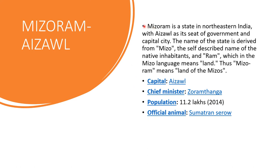The next one is Mizoram and its capital is Aizawl. Mizoram is a state in northeastern India with Aizawl as its seat of government and capital city. The name of the state is derived from Mizo, the self-described name of its native inhabitants, and Ram, which in the Mizo language means land. Thus, Mizoram means land of the Mizos. Capital is Aizawl, chief minister is Zoramthanga, population is 11.2 lakhs in 2014, and the official animal is Sumatran Serow.